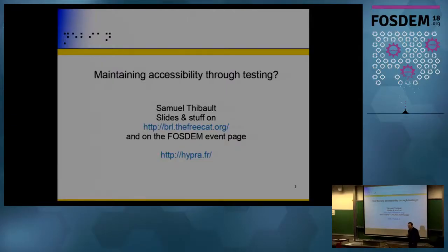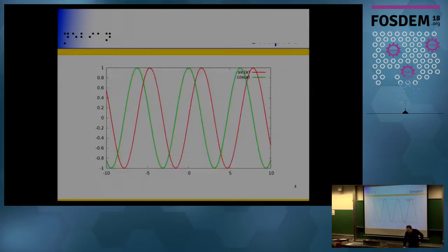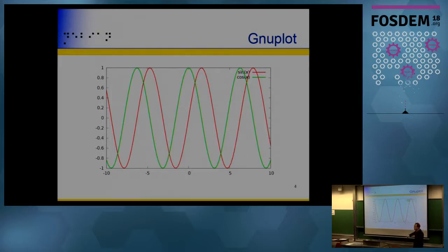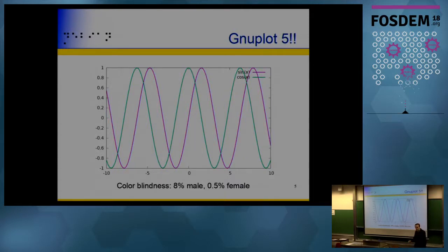Good afternoon. This is a continuation of the previous talk about maintaining accessibility in the long run through testing. What is the accessibility problem with Gnuplot 4? The colors red and green are the worst choice because a lot of people can't distinguish them — about 8% of male people cannot. With Gnuplot 5 they improved this. How many people here are colorblind? Statistically there should be at least one person.